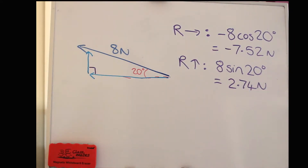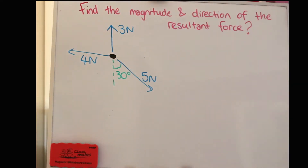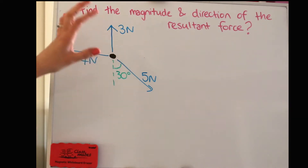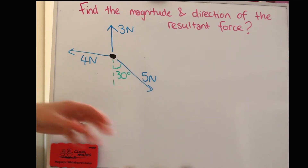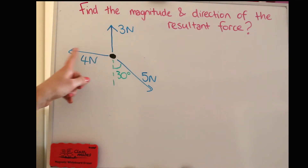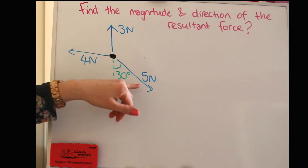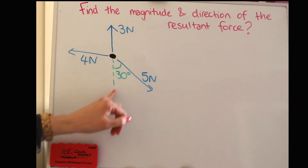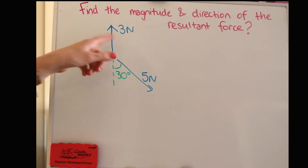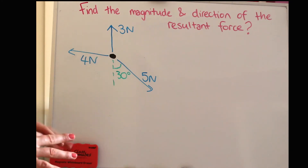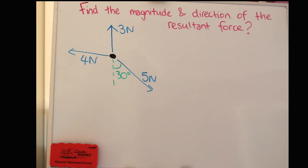That's the basics of how to resolve a single force. Now we're going to practice more complex questions when you've got more than one force. Here we have a light particle — which just means don't worry about gravity — with three forces acting on it. The 3 newton force is acting vertically, the 4 newton force is acting horizontally, and the 5 newton force is acting at 30 degrees to the vertical. Forces that are perpendicular to each other don't affect each other, so we can resolve forces into two perpendicular directions and consider them separately.